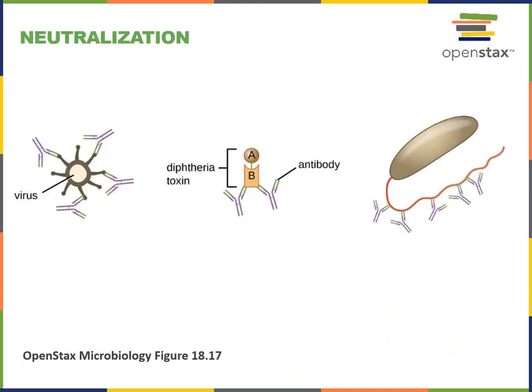Neutralization is one of the mechanisms through which antibodies can help defend against infection. Here in the illustration we see three different examples of neutralization where an antibody binds to a pathogen or a toxin from a pathogen and helps to block the harmful effects. On the left we see a virus being neutralized by antibodies — when the antibodies bind to antigens on the surface of the virus, this blocks the virus's ability to enter our cells, neutralizing the virus and preventing it from being able to spread infection.